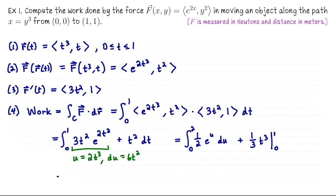So to finish up this work computation, we anti-differentiate, we just get ½ e^u plus plug in 1 and you get ⅓, plug in 0 you get 0, so plus ⅓. So overall it's e²/2 - ½ + ⅓.